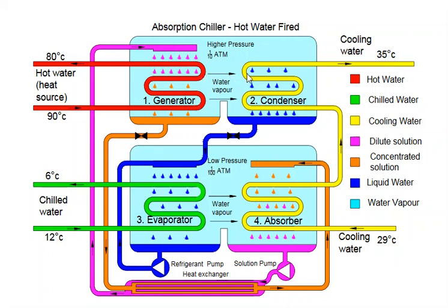The water vapor moves to the condenser. In the condenser, cooling water — coming from a cooling tower — condenses the water vapors, which then move downward to the next compartment.